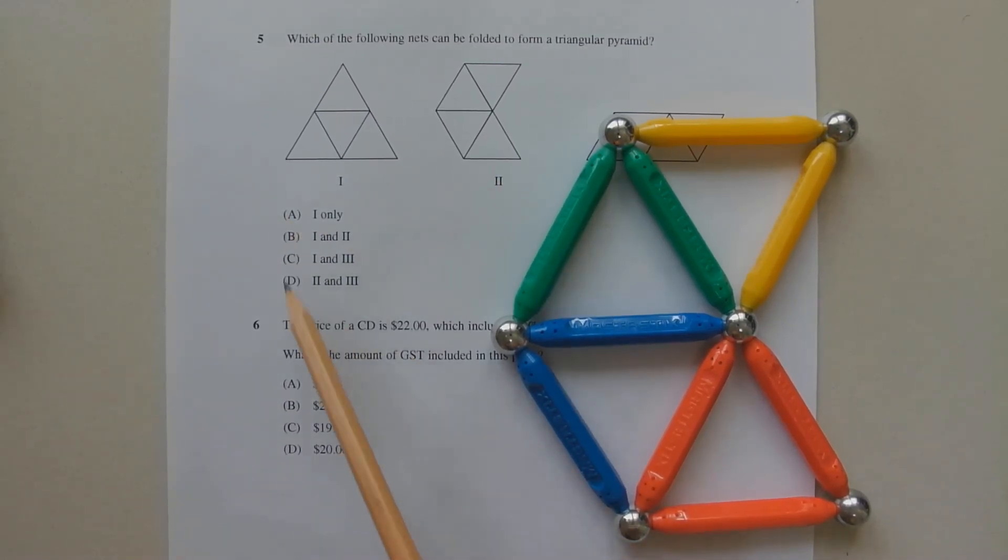So any option that includes net number two in the response is incorrect. So option D and option B both suggest net number two, so both of those options are incorrect.